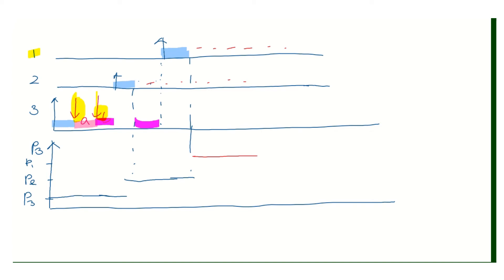Before preemption, task three was executing critical section B. It continues that execution, then releases the critical section B resource because it has finished that work. Next, task three executes the critical section A job and finishes that work as well.